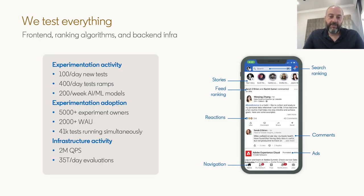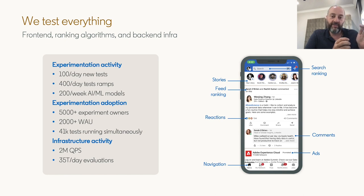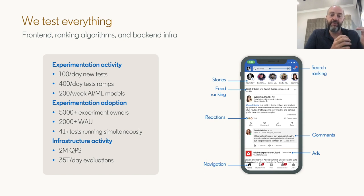The moral here is that we test everything at LinkedIn — whether it's front-end, ranking algorithms, or back-end infra. Every product team and infra team is running A/B tests and experimentations. That's the only way for us to make sure any change we introduce on the platform is introduced in a controlled manner, with gradual impact monitoring. We check our true-north metrics, signpost metrics, and guardrail metrics, making sure they're all safe as we deploy changes to the outside world.